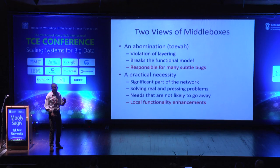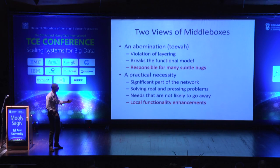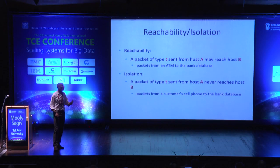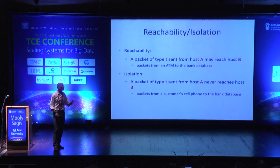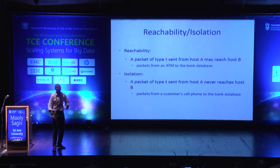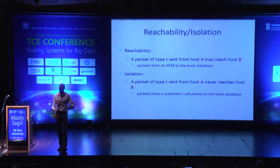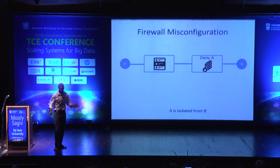What's interesting from a verification perspective is that middle boxes have mutable states that record the functionality of the network. What we want to do is take a description of the network and prove properties like reachability — that a packet sent from one host can reach another — or more importantly, isolation: that a packet type T sent from A will never reach B. For example, an SSH packet should never reach from A to B.